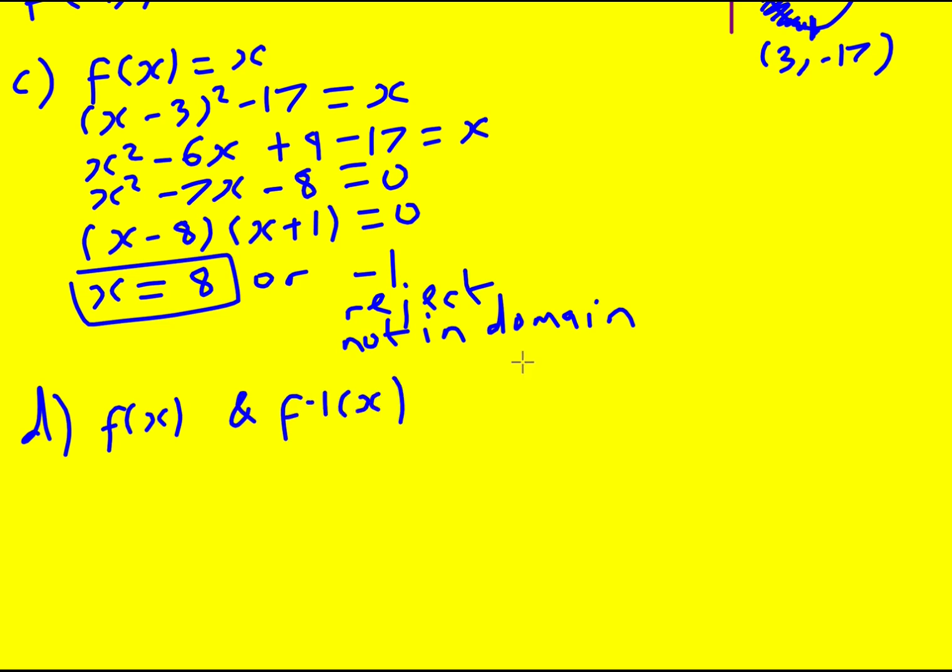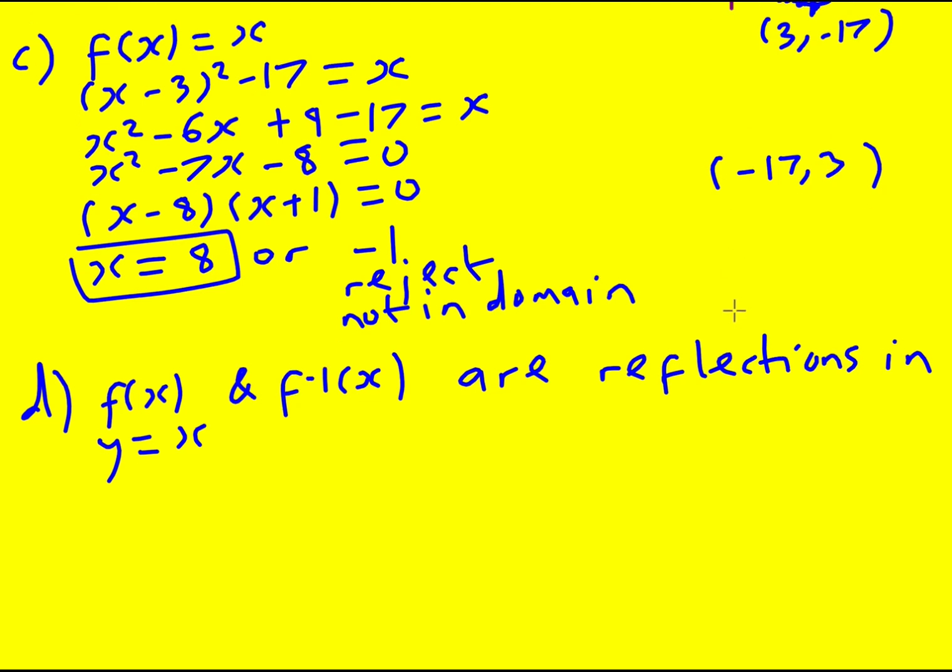And the inverse are actually related because they are reflections in y equals x. Essentially if you had, say, (3, -17) for the function, then you would get (-17, 3) for the inverse. And that is precisely a reflection y equals x; the two are swapping around when you do that reflection. So you can say that, so they will intersect on y equals x.